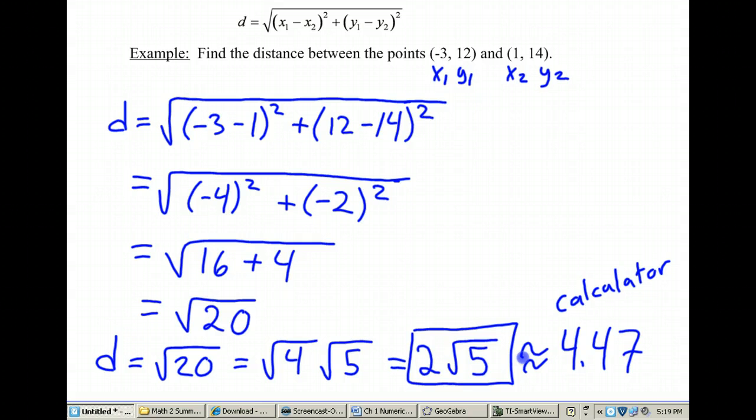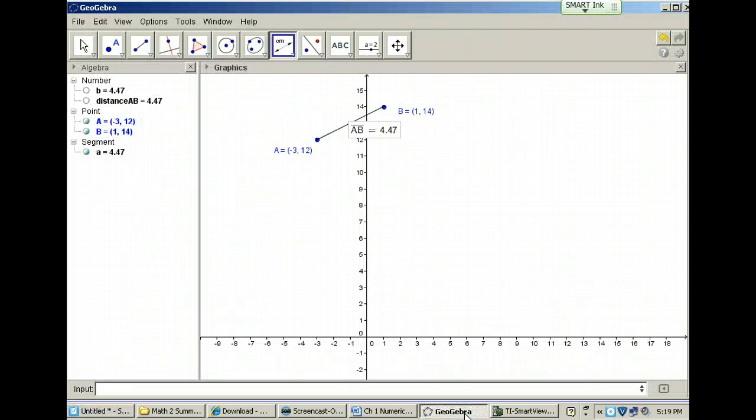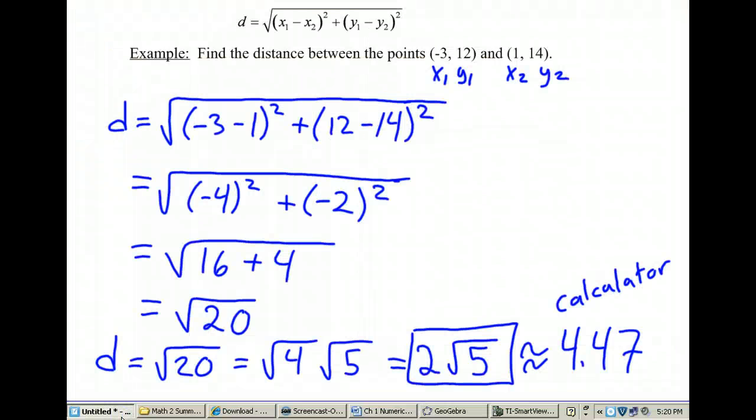This is approximately 4.47 when we went to the calculator. And so that's what GeoGebra told me the distance was between those two points approximately. So it looks like we have the correct answer of 2 root 5. So that's how you use the distance formula to find the distance between two points.